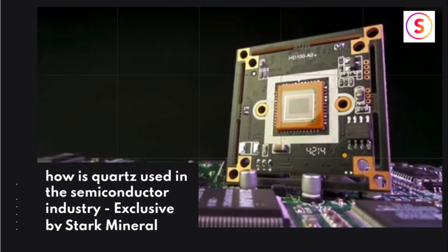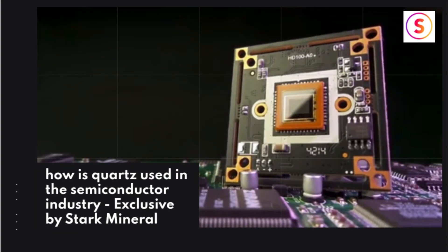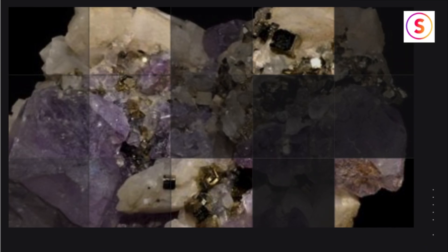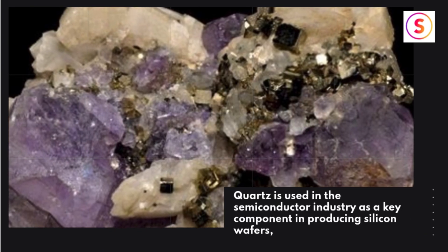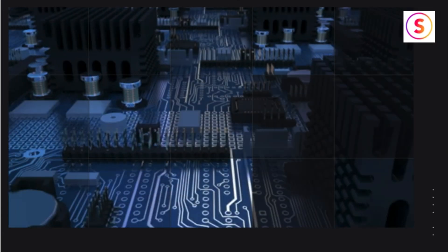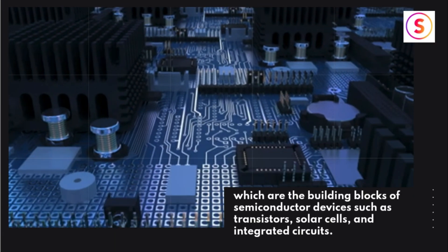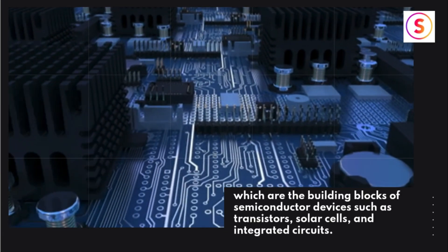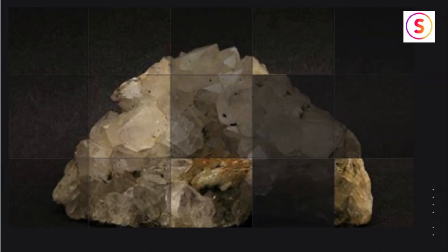How is quartz used in the semiconductor industry? Quartz is used as a key component in producing silicon wafers, which are the building blocks of semiconductor devices such as transistors, solar cells, and integrated circuits.